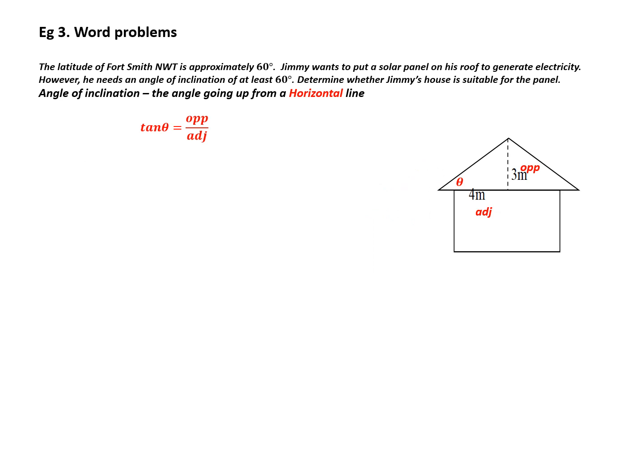So I write out my ratio because I'm working with opposite and adjacent. I notice that my opposite is 3, my adjacent is 4. I also have replaced theta with x, although not necessary. When I punch this into my calculator, second function tangent, 3 divided by 4, I get an answer of 36.87. Now that's the mathematical answer. But is Jimmy's house suitable? Well, it has to be at least 60 degrees. This is not 60 degrees. Therefore, it is not suitable. It's a word problem, so I need a word answer.